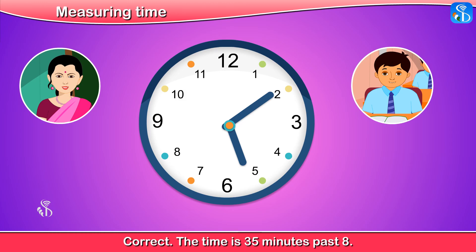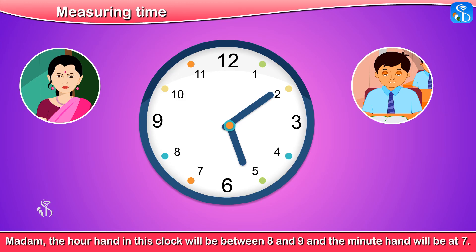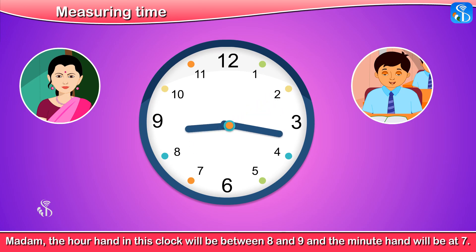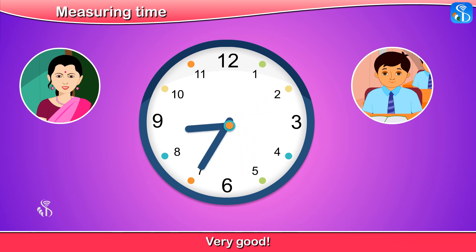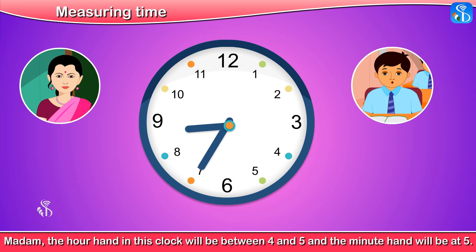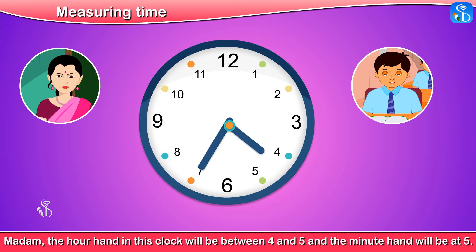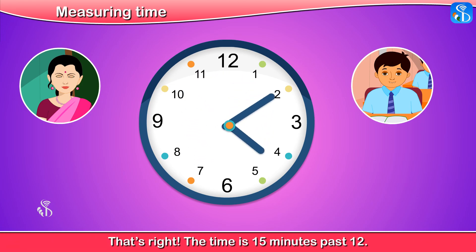The time is 35 minutes past 8. Madam, the hour hand in this clock will be between 8 and 9 and the minute hand will be at 7. Very good. 25 minutes past 4. Madam, the hour hand in this clock will be between 4 and 5 and the minute hand will be at 5. That's right.